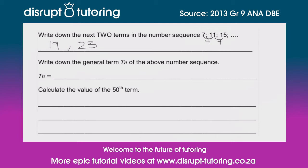Now it gets a little bit more tricky when they start asking us for the general term. What does the general term mean? It just means: what is a formula that can help us work out what the term is going to be at any position in the sequence. So at any position in the sequence, what is the term going to be? That's what a general term is. We're looking for the nth term — I'm sure you've heard 'nth term' before — that's what it's all about.